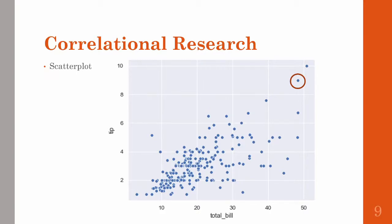When we use correlational research, we normally show the relationship between two variables using a scatter plot. A scatter plot shows the position of one individual on both variables. So one data point — shown in a red circle — represents this person's total bill at a restaurant, shown on the x-axis, which was something around $47.